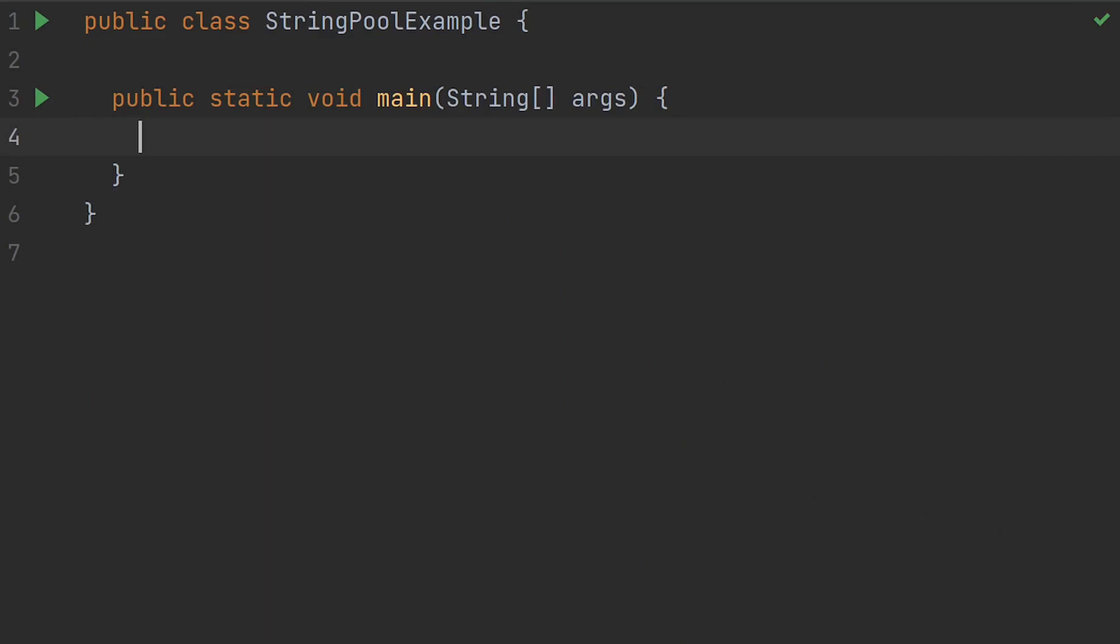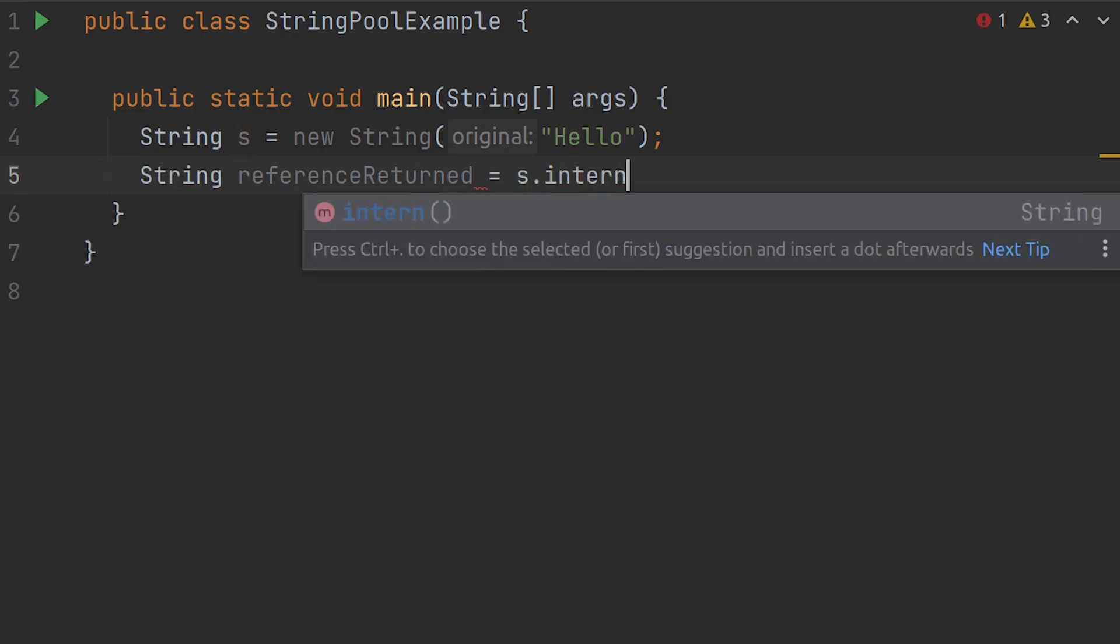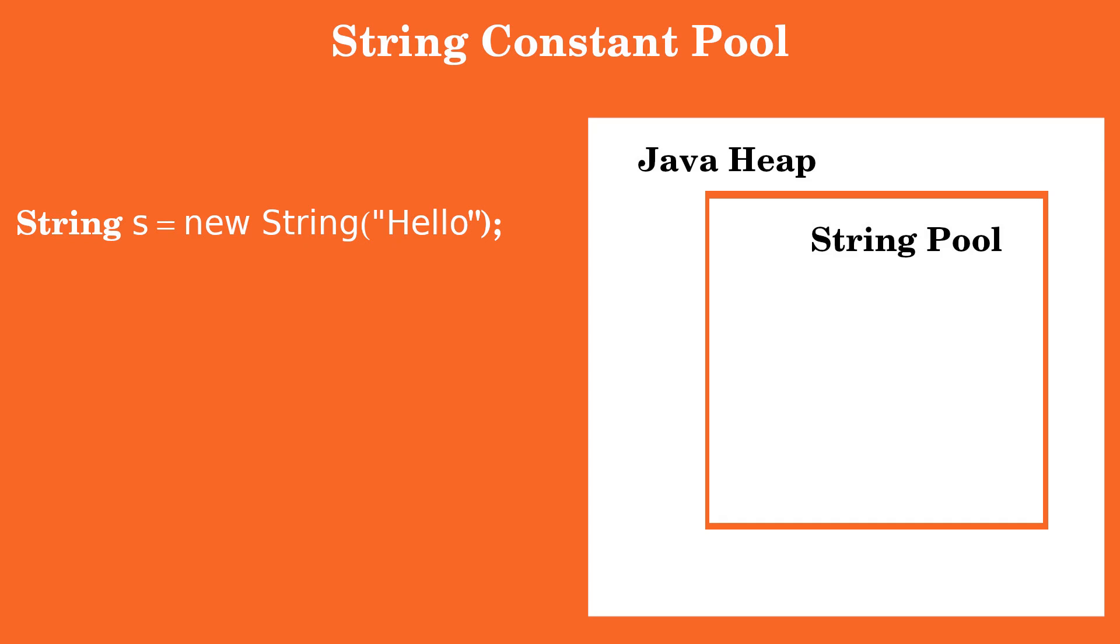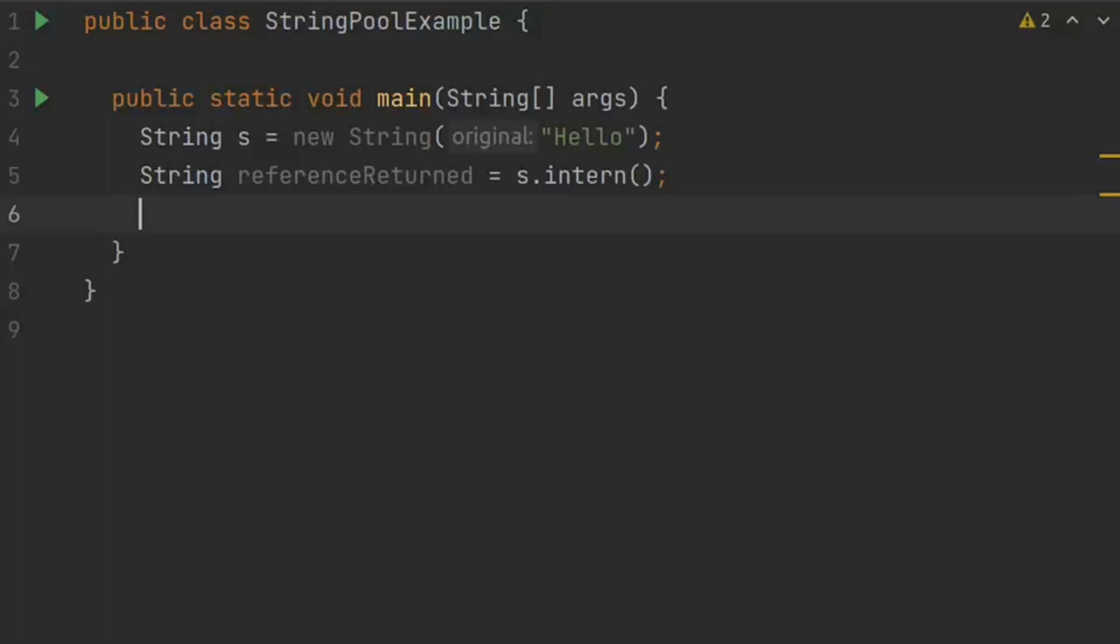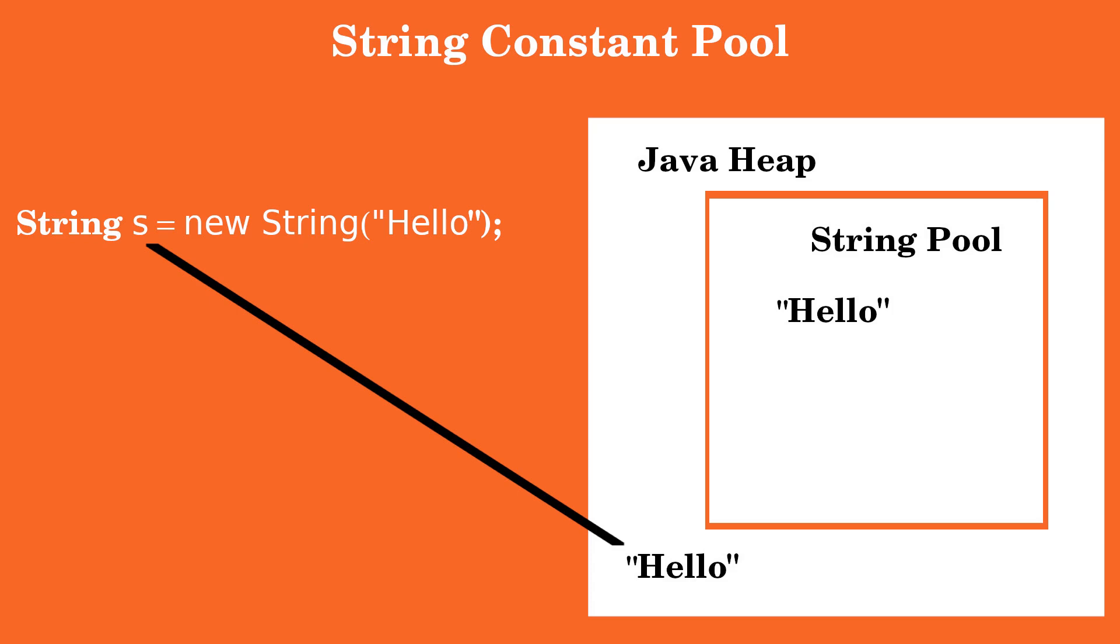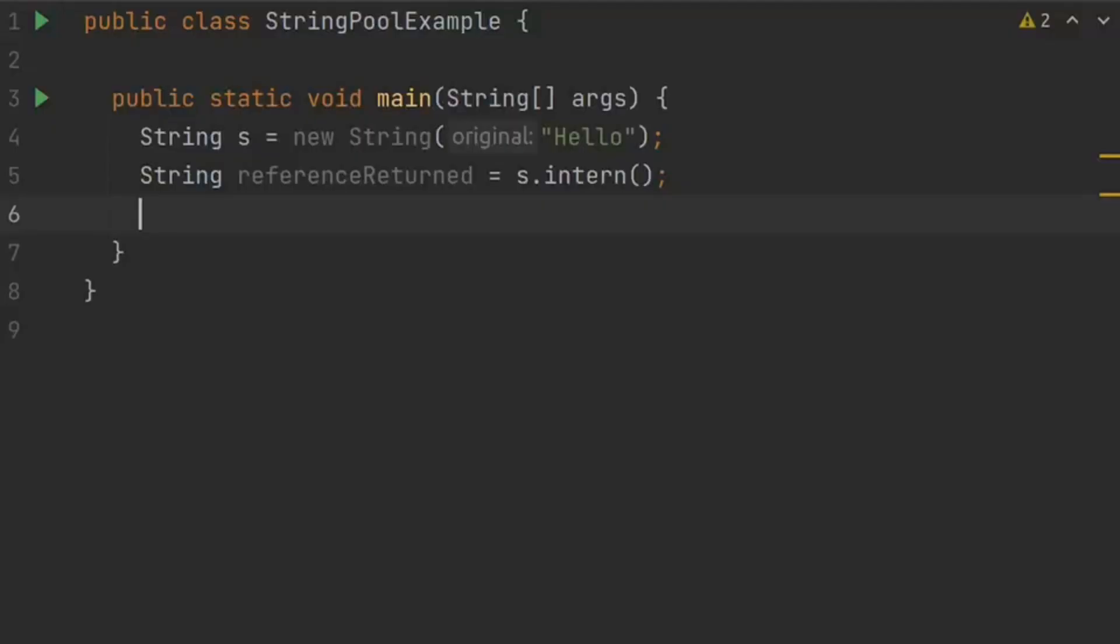Let's say string s equals new string of hello. Let's call string reference returned s dot intern. Let's evaluate the behavior step by step. As we discussed before, two objects will be created for this string. One inside the string pool for the string literal hello, and the other object inside the heap space. And the reference variable s points to the object instance in the heap space. Now I'm calling s dot intern. JVM looks if the value hello of string s already exists in the string pool. In this case it does. So string dot intern returns the reference of the instance inside the string pool.